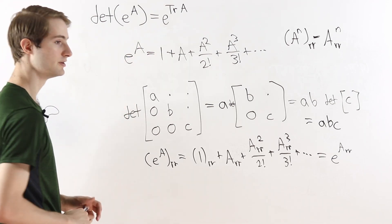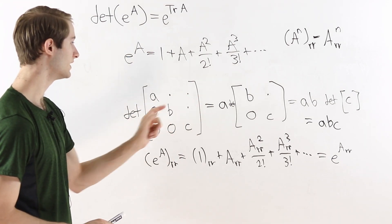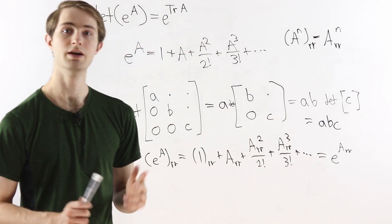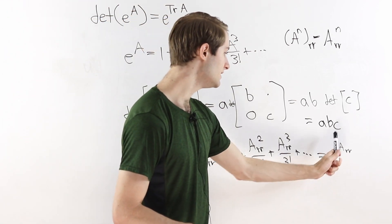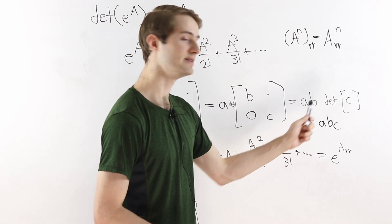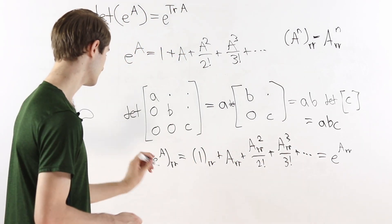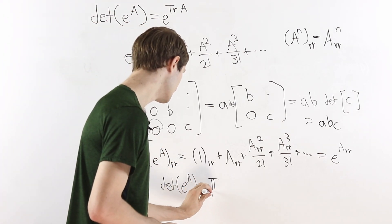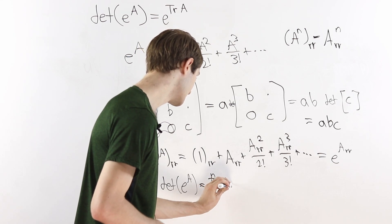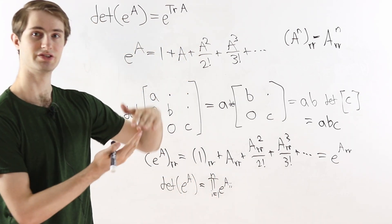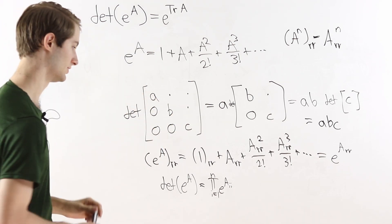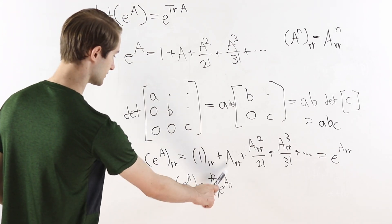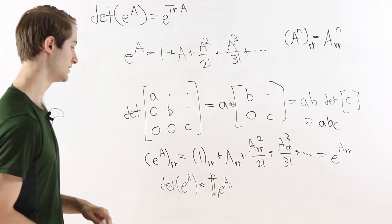Now we want the determinant. Since e to the A is upper triangular, its determinant is the product of the diagonal entries, which are e to the a sub 1 1, e to the a sub 2 2, e to the a sub 3 3, and so on. So the determinant of e to the A is the product from i equals 1 to n of e to the a sub ii, where n is the size of the matrix A.